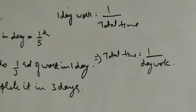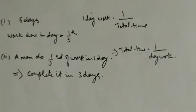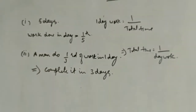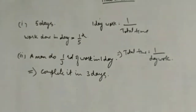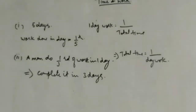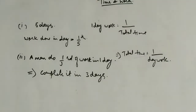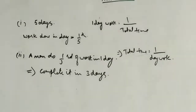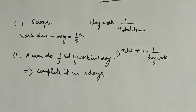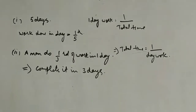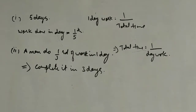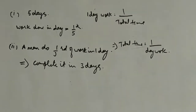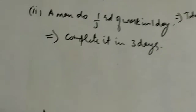These are the 2 basic things about time and work. If we have the total number of days taken to complete a work, we can find the 1-day work. If we have the 1-day work, the reciprocal of that gives us the total time to complete the work.